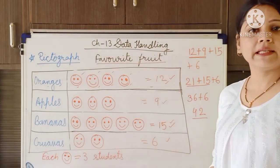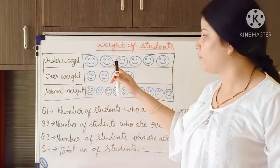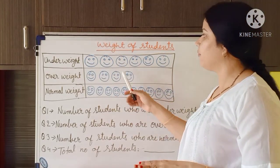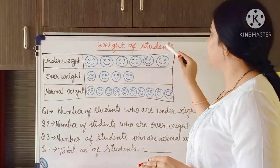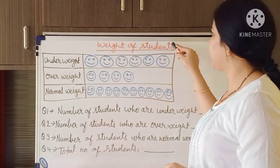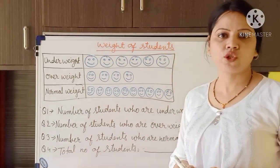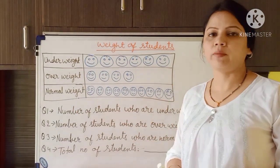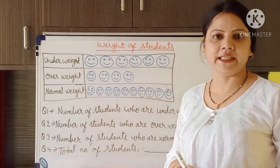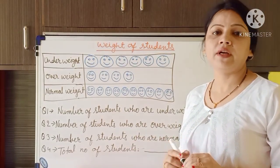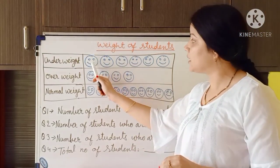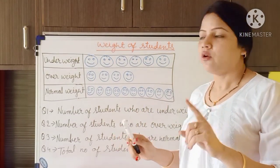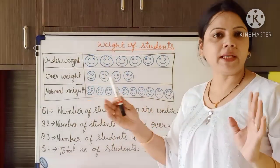I hope this is clear to you. Here I have drawn another pictograph discussing the weight of students, with the title 'Weight of the Students'. The label is given and the pictures are also given, but I have not given any key here. If the key is not given in the pictograph, then we consider one picture as one — we will not multiply it by any number.